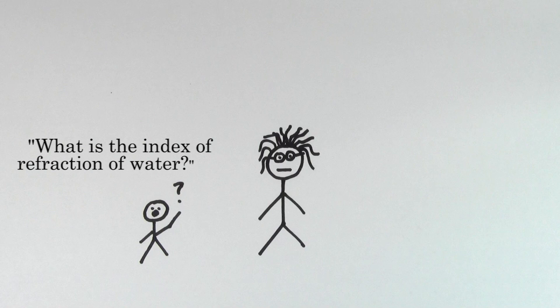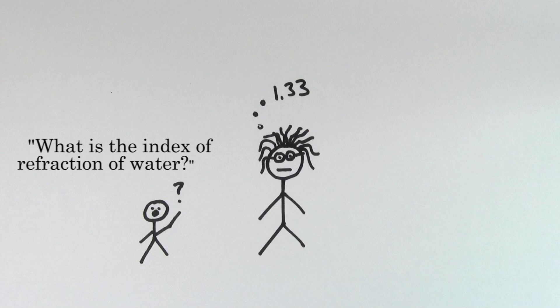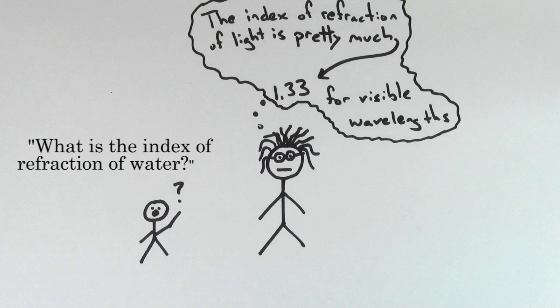For instance, if you ask a physicist or look up the index of refraction of water, most sources would say it's 1.33. But what those sources really mean is that the index of refraction is pretty much 1.33 for the entire visible range of wavelengths.